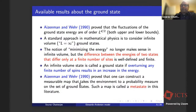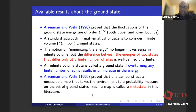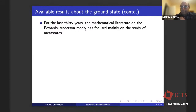An infinite volume state is called a ground state if overturning any finite number of spins results in an increase in the energy — so it's a local optimum. Aizenman and Wehr proved that one can construct a measurable map taking the environment, the full disorder, to a probability measure on the set of ground states. Such a map is called a metastate in this literature.